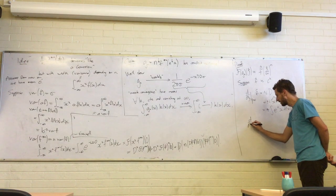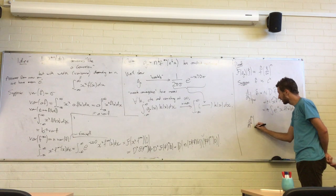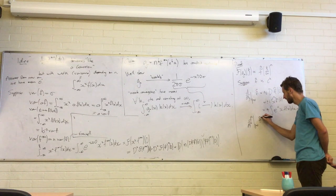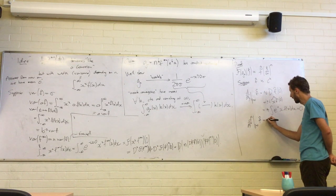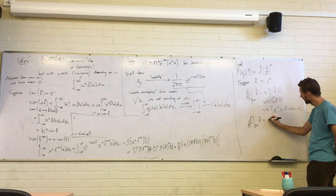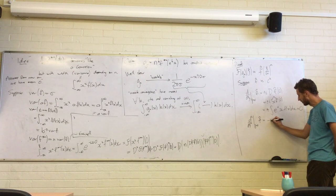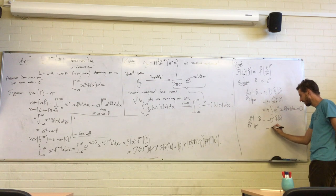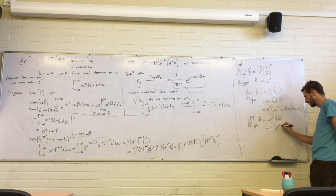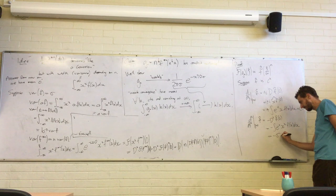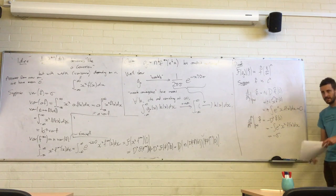Similarly, d²/dxi² of f-hat at xi equals 0: the minus sign doesn't bother us because it appears twice. We get minus the integral of x² f(x) dx — and that's exactly minus the variance, minus sigma².